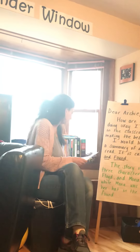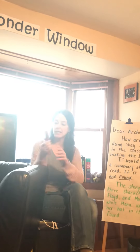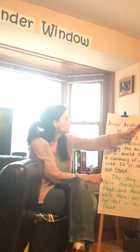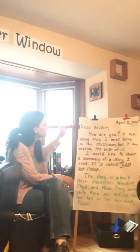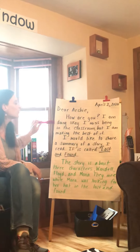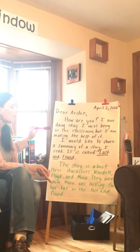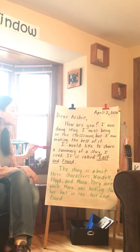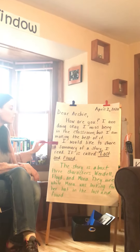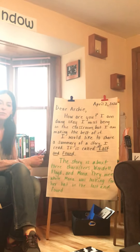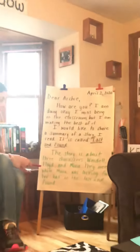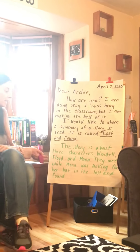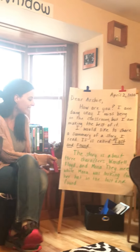So here's my example of a letter with all five friendly letter parts and a summary. I'll use my magnet wand — it's April 2nd, 2020. I wrote my letter to Archie. Dear Archie, how are you? I am doing okay. I miss being in the classroom but I'm making the best of it. I would like to share a summary of a story I read. It is called The Lost and Found — and usually when we're writing about story titles, you underline the title. I put my summary in green. It says the story is about three characters: Wendell, Floyd, and Mona.